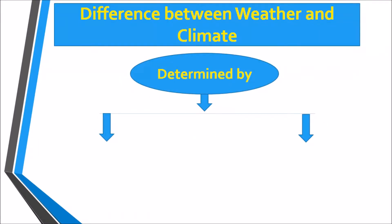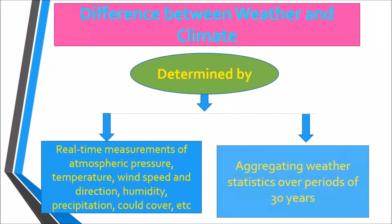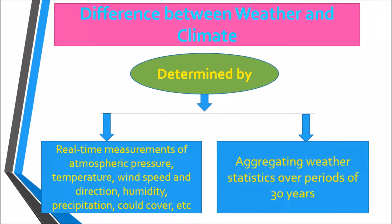Weather and climate are determined by different means. Weather is determined by real-time measurements of atmospheric pressure, temperature, wind speed and direction, humidity, precipitation, cloud cover, and so on. Climate is determined by aggregating weather statistics over periods of 30 years.